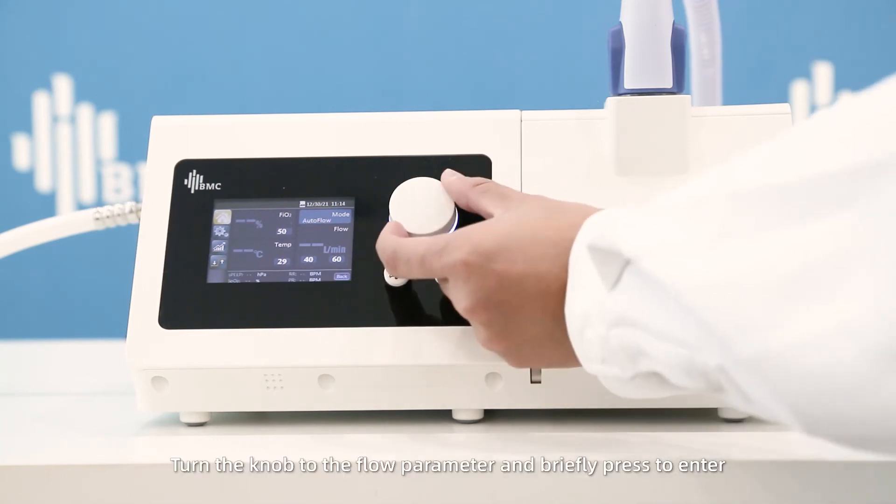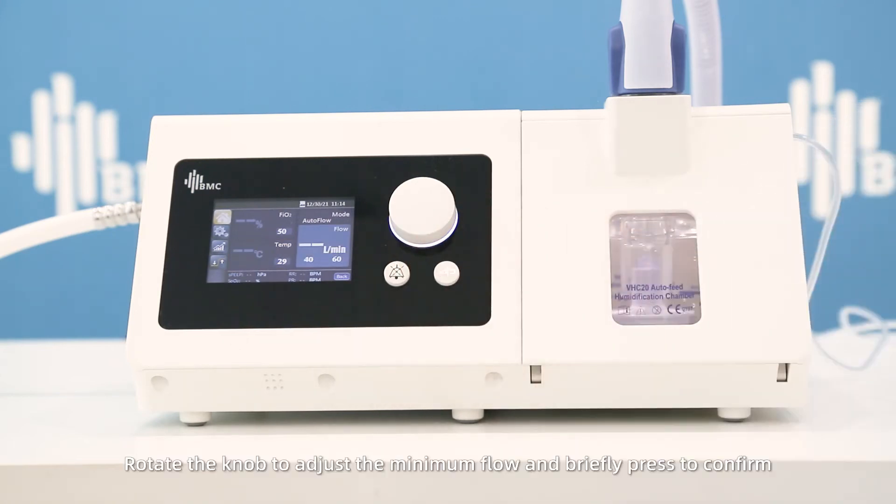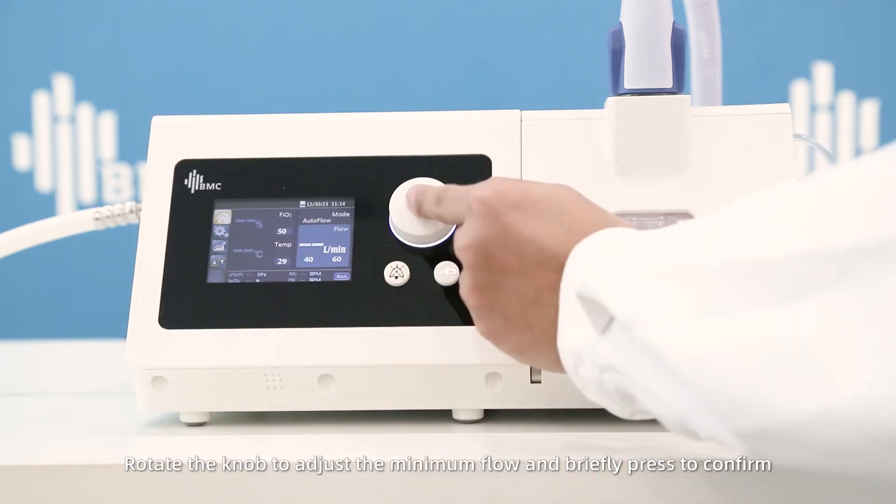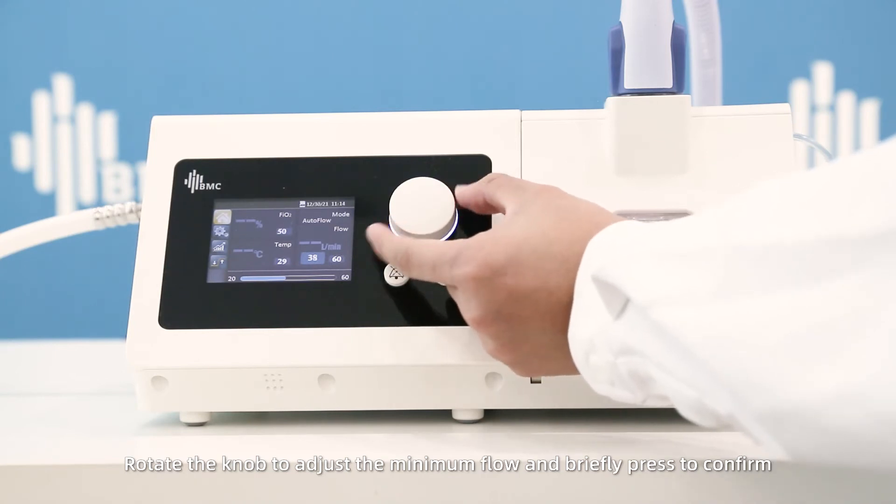Turn the knob to the flow parameter and briefly press to enter. Rotate the knob to adjust the minimum flow and briefly press to confirm.